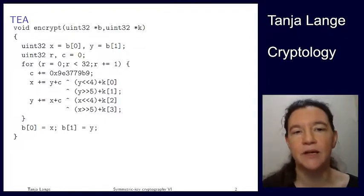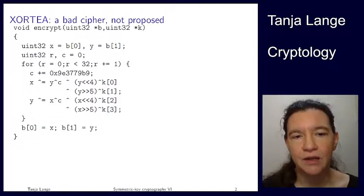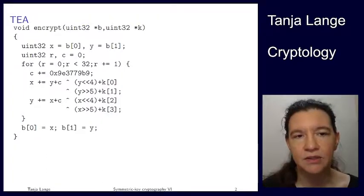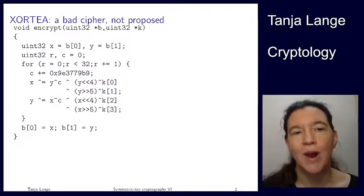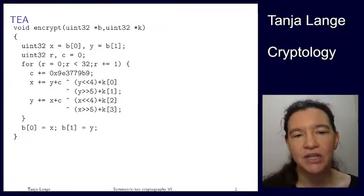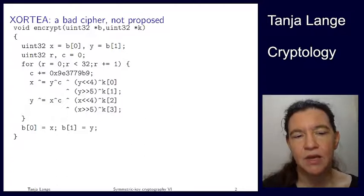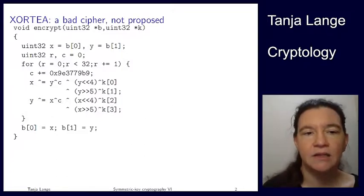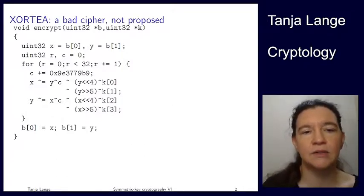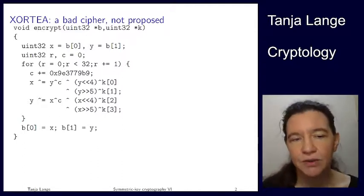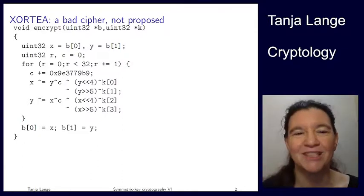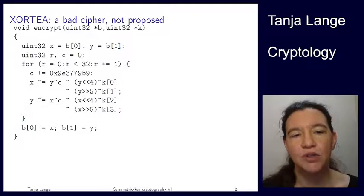So that's TEA, and now we're going to change one thing. This is TEA and this is XOR-TA. The only change is that all the pluses in the updates of X and Y have changed from plus to XOR. I'm not updating this in the definition of C because C would just bounce between two values — you do it twice and you get back to zero, so that would not be good.